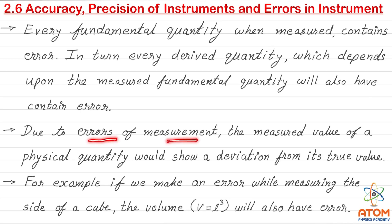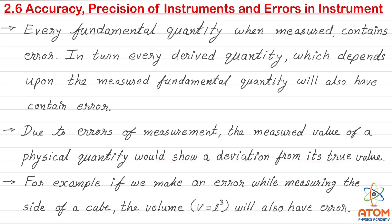Due to errors of measurement, the measured value of a physical quantity will show a deviation from its true value. For example, if we make an error while measuring the side of a cube, the volume V = L³ will also have some error.